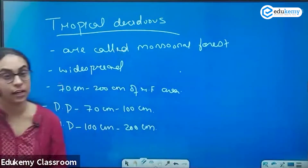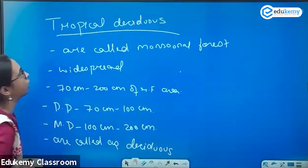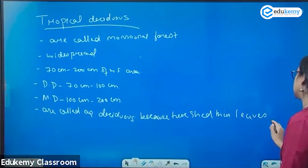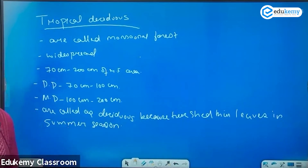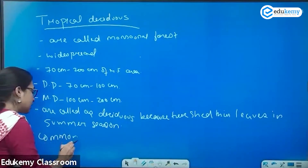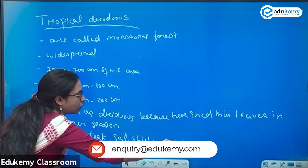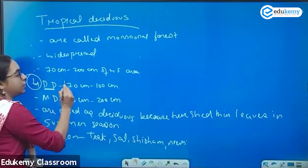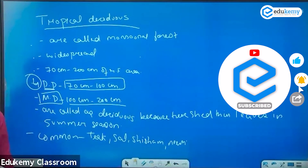Why are they called deciduous? They are called deciduous because the trees shed their leaves in the summer season. The common varieties include teak, sal, shisham, neem, etc. Dry deciduous is between 70 to 100 centimeters of rainfall, and moist deciduous is between 100 to 200 centimeters.